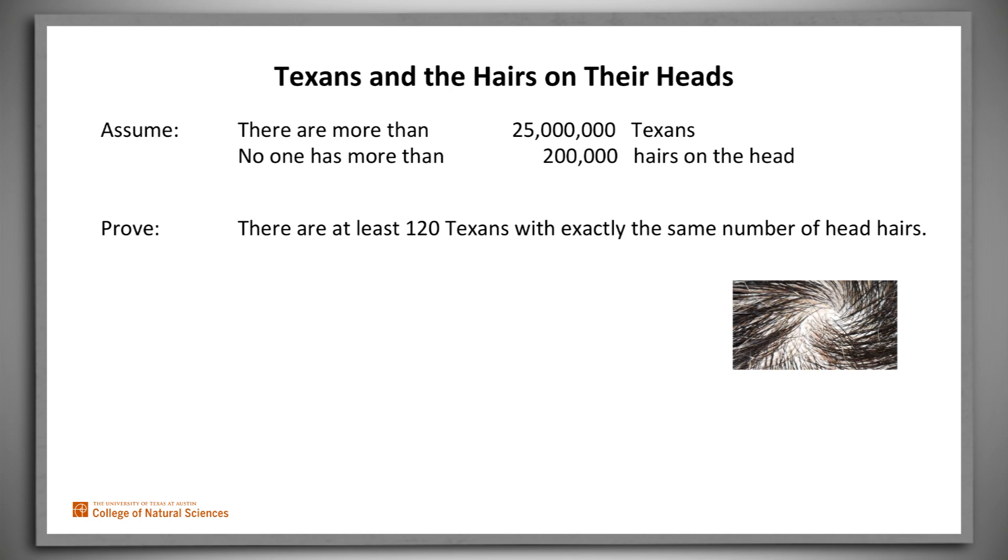To use the pigeonhole principle to solve this problem, we have to define holes and the pigeons that will be mapped to those holes. The holes are the possible values for hair counts. There are 200,001 such values, since 0 is an option, of course. Every Texan must get mapped to exactly one of those values.